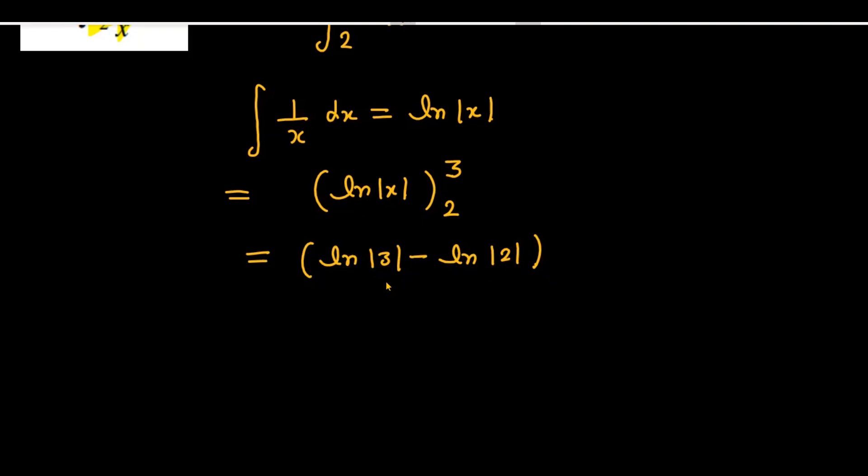Now because 3 and 2 are already positive quantities, you can directly remove this mod. So after this it finally becomes ln 3 minus ln 2.